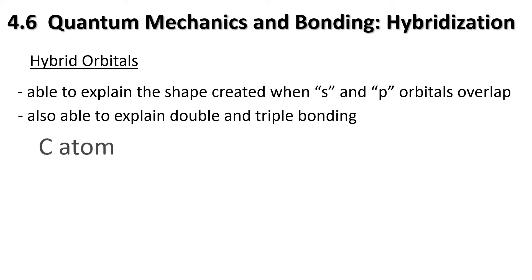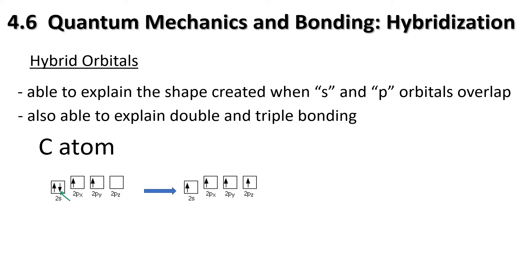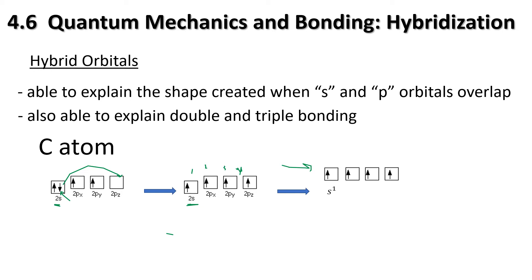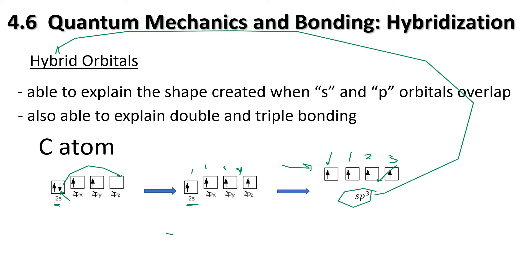Let's look at carbon in methane more closely. We weren't happy with the original configuration, so realizing carbon is going to make four bonds, we need to take one electron and promote it up to the 2pz. Now we have four orbitals. To clean this up, all four orbitals are at the same energy level. Since we're talking about one s orbital and three p orbitals, we represent this as sp³. This sp³ hybridized orbital is what we have created.